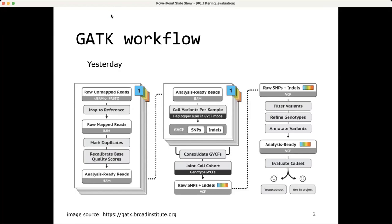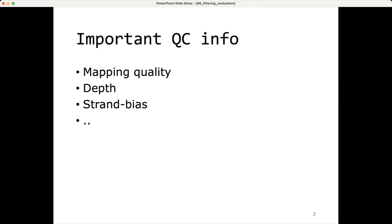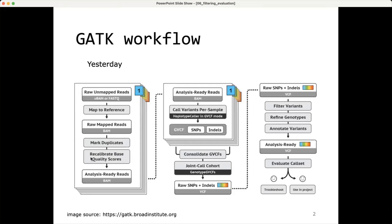So just to show you where we are in the workflow, we have gone through all the mapping, we have created the GVCFs. We have added those GVCFs in a database, so consolidated them, and then we did a joint call. So we extracted all of the information out of the database. And now we have one VCF containing all of the variants in our cohort. So now we basically have the raw SNPs and indels, and we need to filter those, but how are we going to filter them?